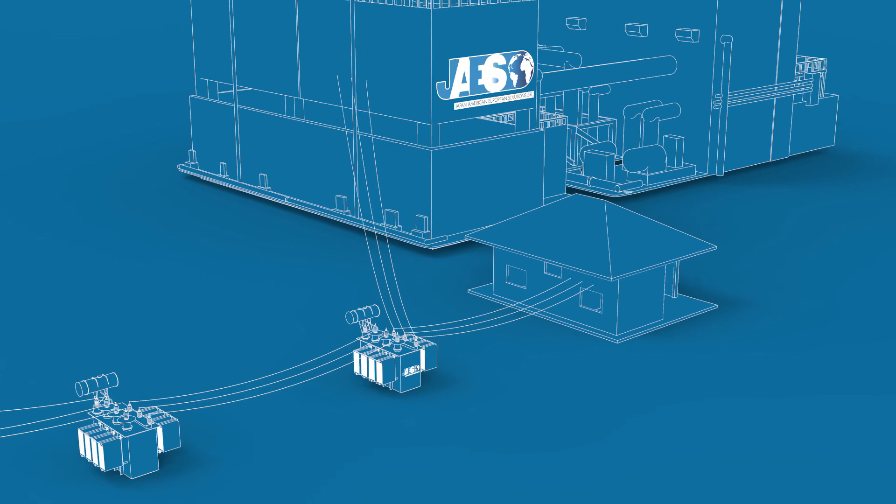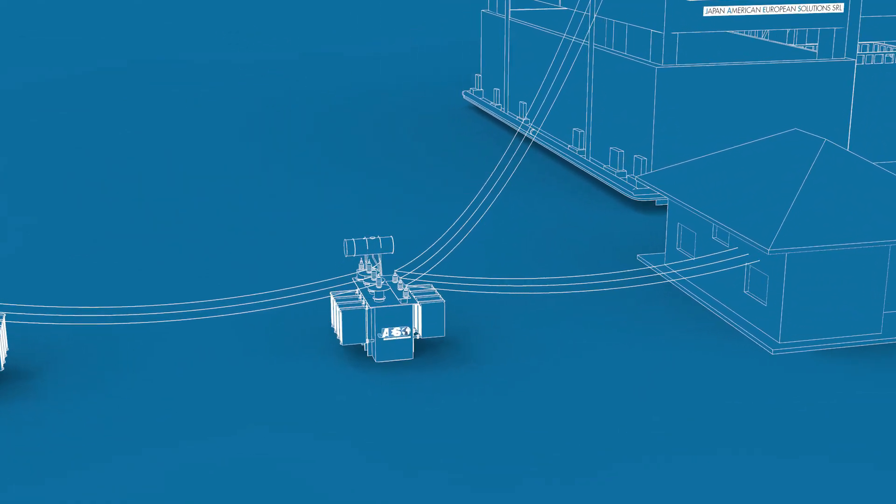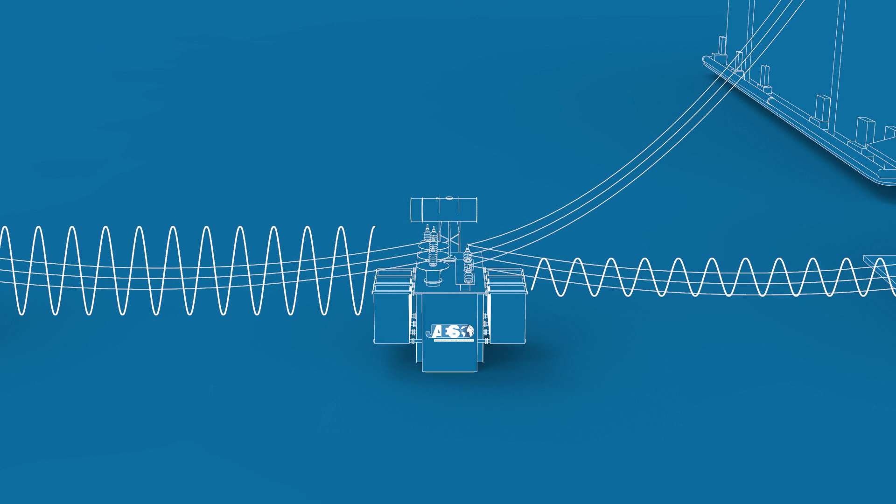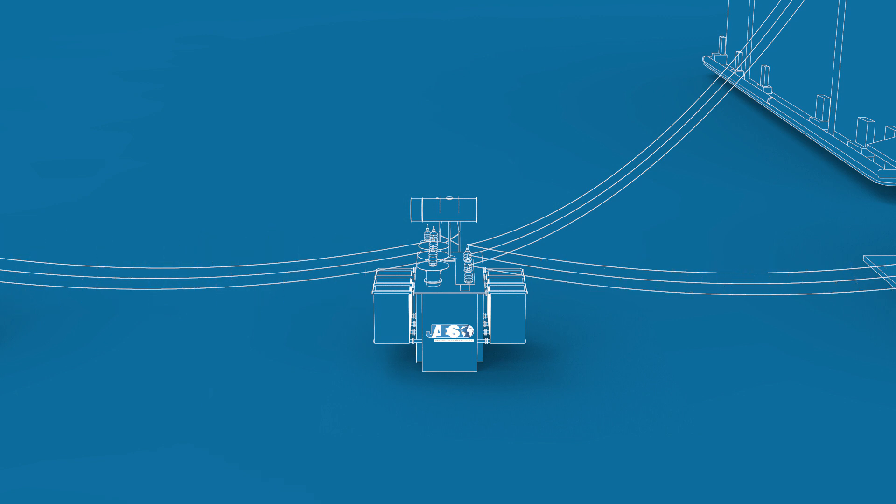A transformer is in fact a static electrical device that uses the electromagnetic induction principle to convert an alternating current signal from one electric circuit to another, often changing or transforming the voltage and electric current. Without transformers, electricity generation and transmission over long distances would not be possible, nor would it power entire cities and industrial complexes.